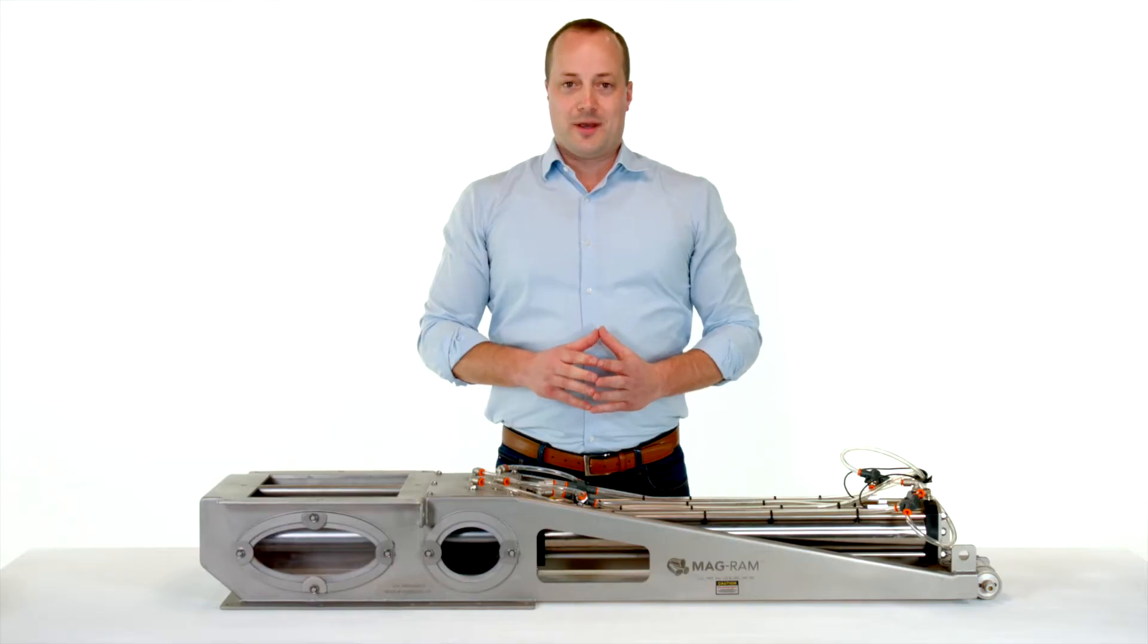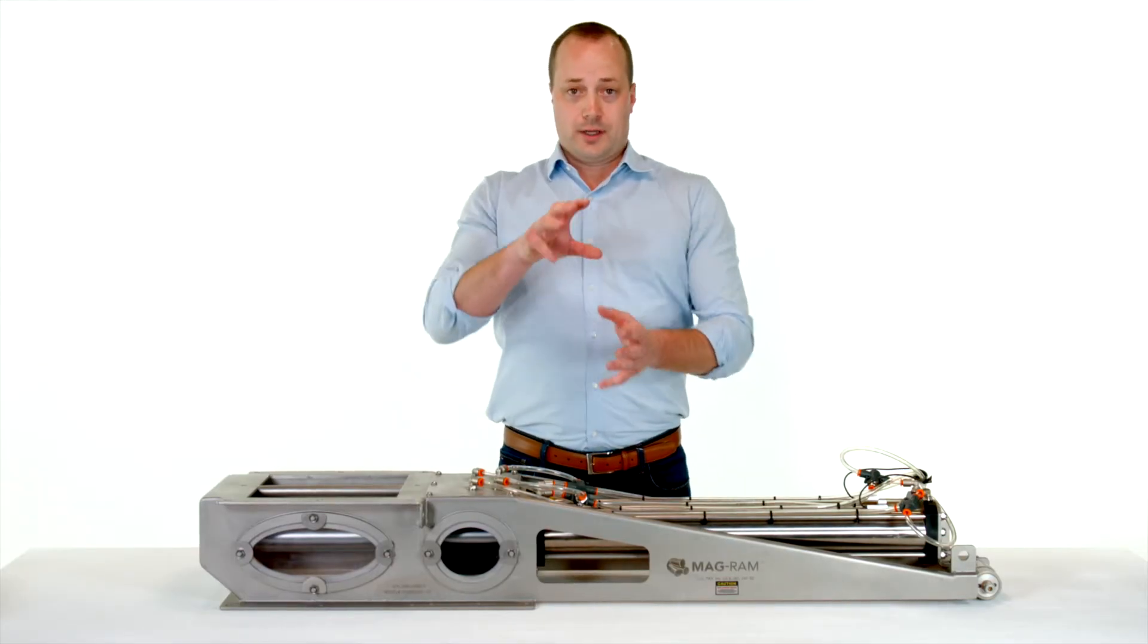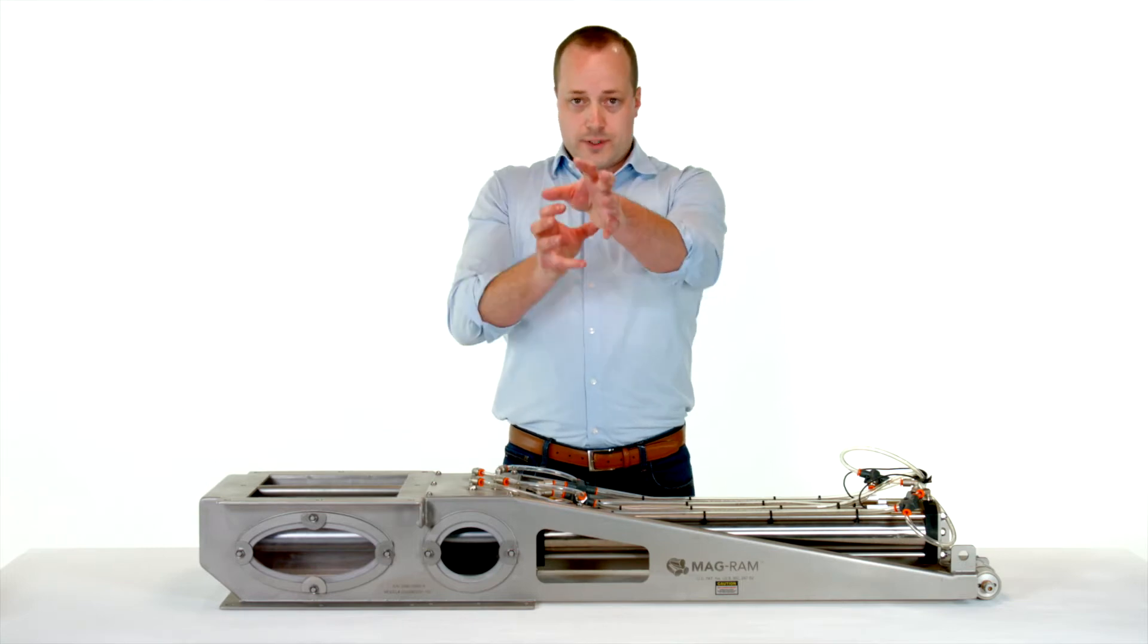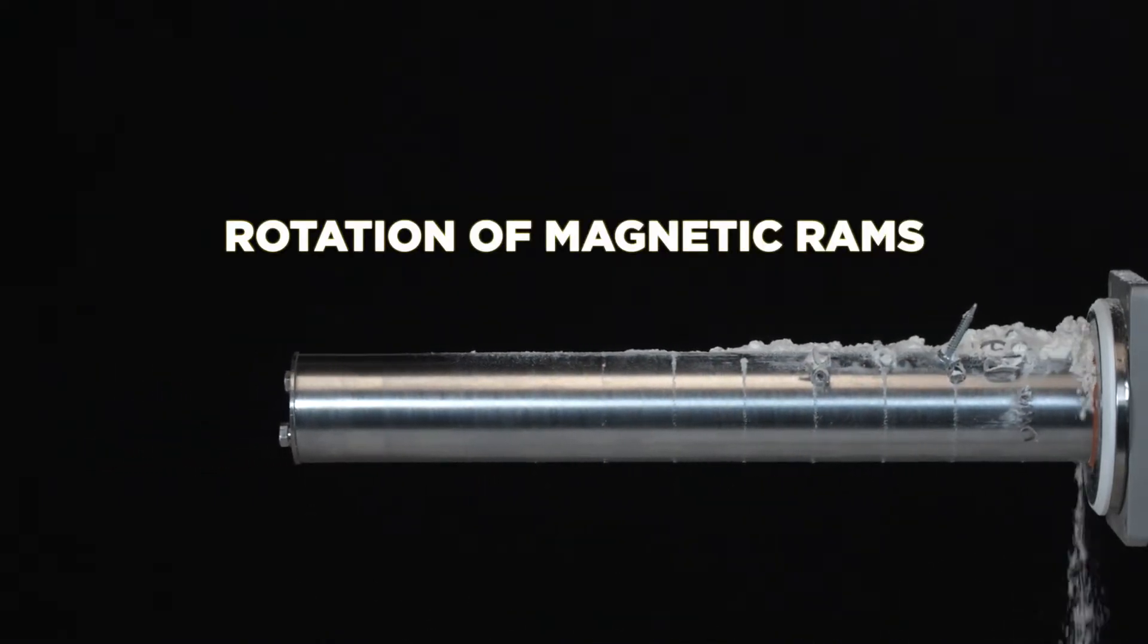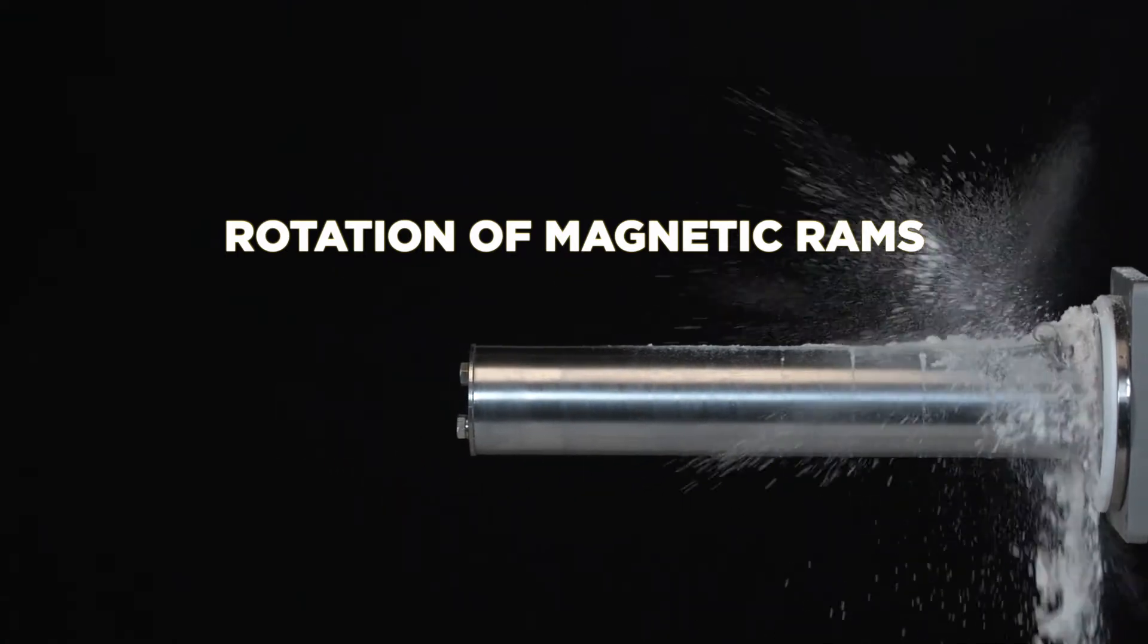One of the unique features of the MagRAM is during the cleaning process the magnet bar rotates, tipping off any of the clean material and also putting the bar into a new position for equalized wear.